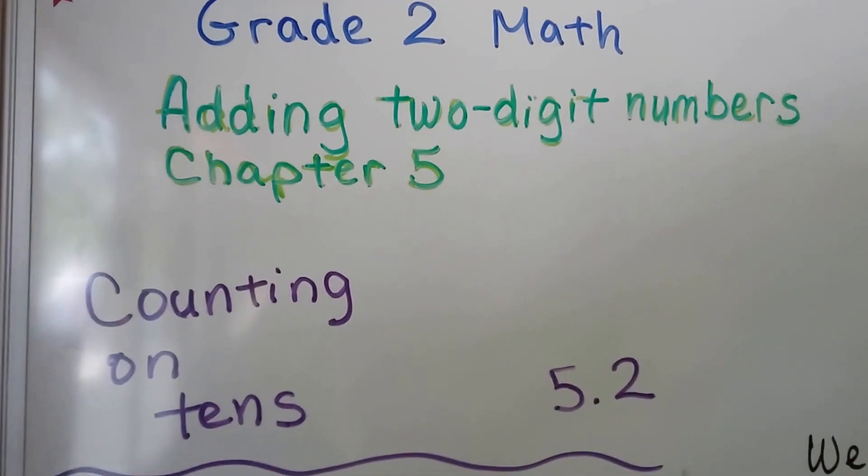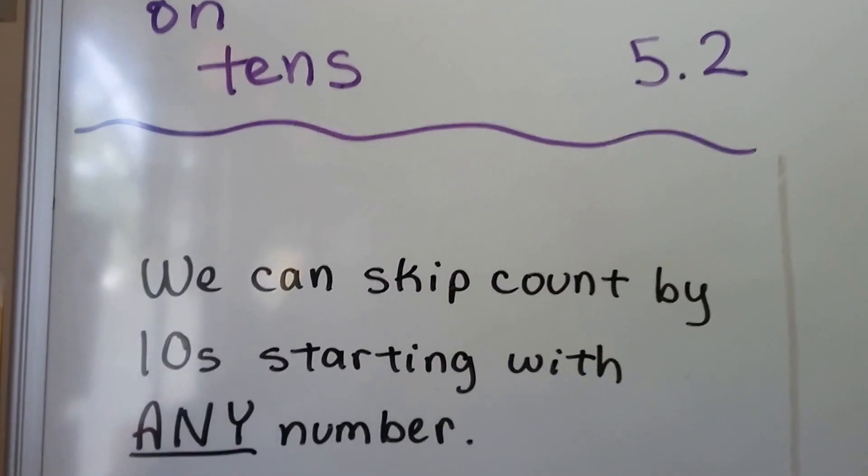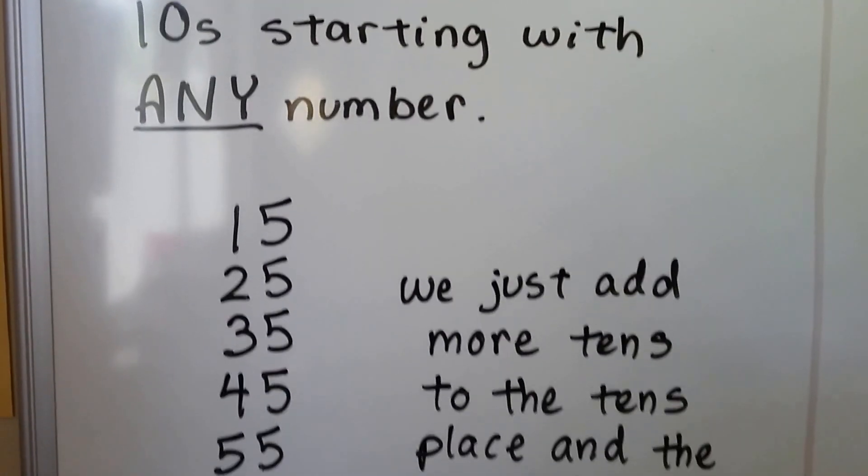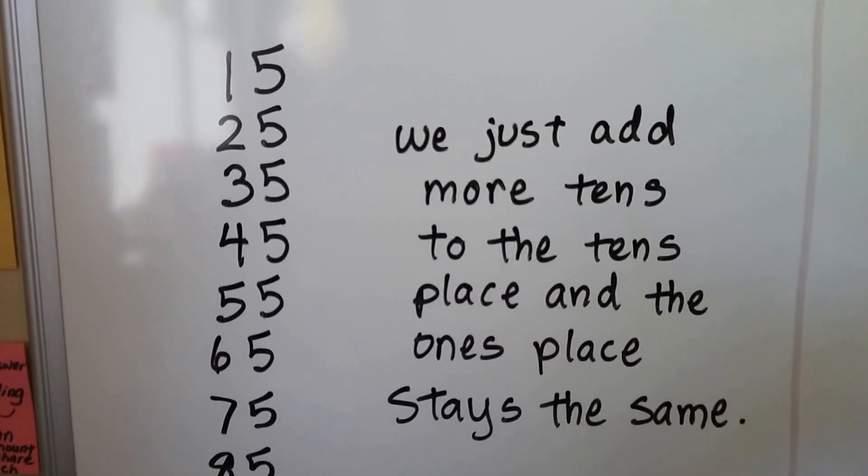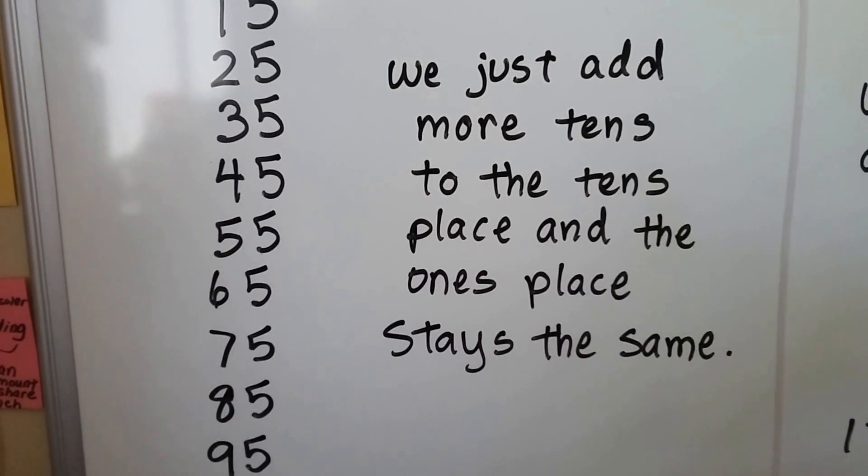Counting on tens less than 5.2 and we can skip count by tens starting with any number. If we want to skip count by tens and we're starting with 15, we just add more tens to the tens place and the ones place stays the same.